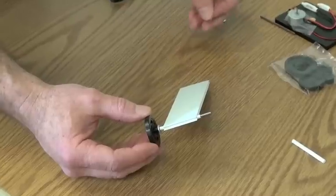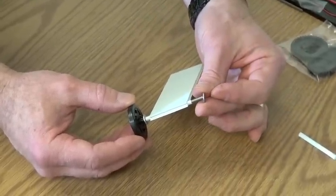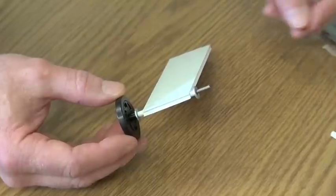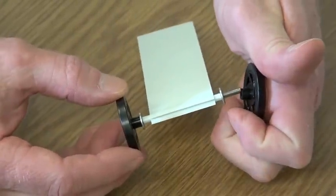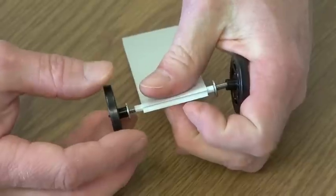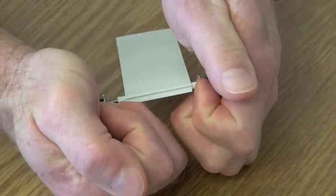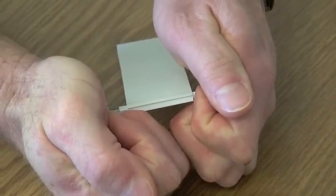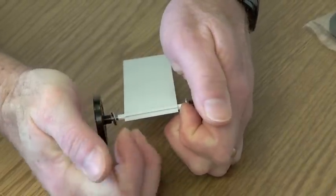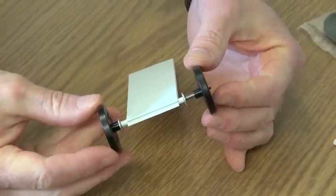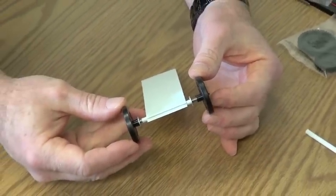We're going to grab another washer and put it against the straw. Then you're going to take your second wheel and push it onto the other side of the axle. This you need to press kind of hard, and that way your wheels won't come off as your car is rolling down the tracks. Now we have the front assembly of your solar car.